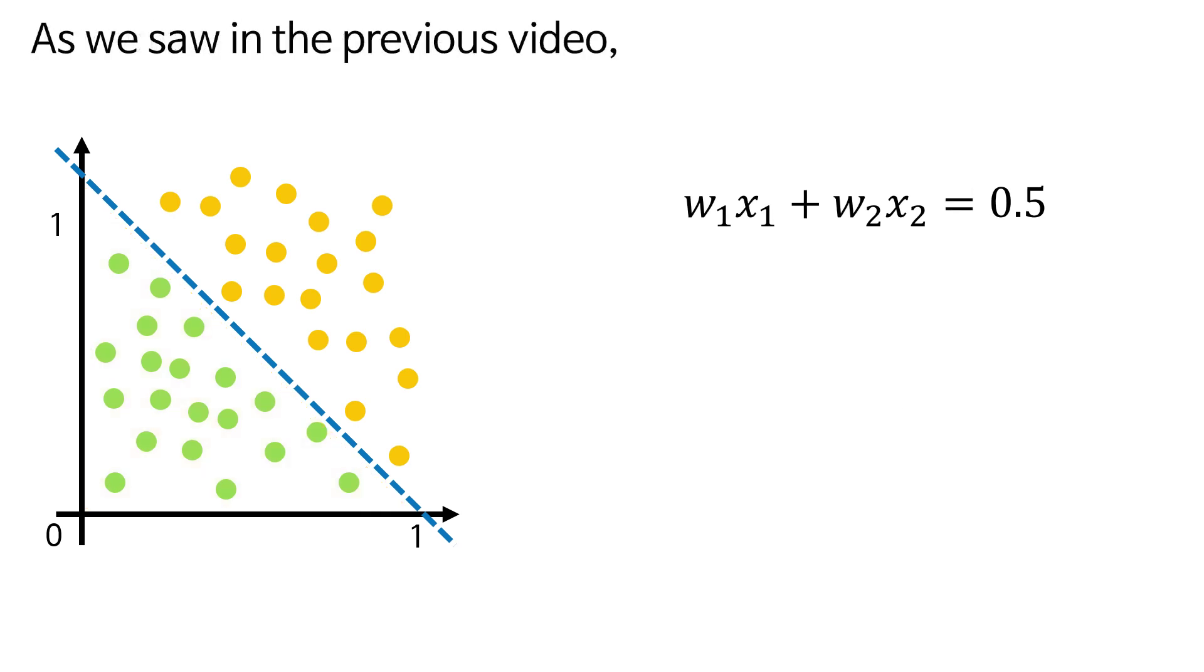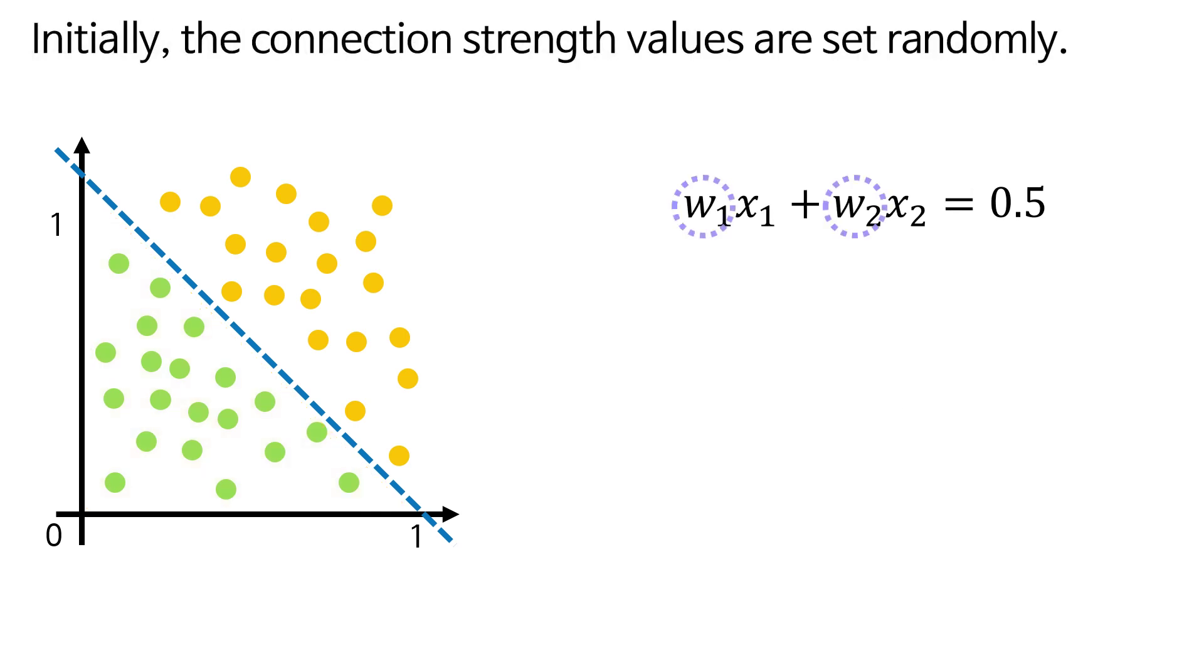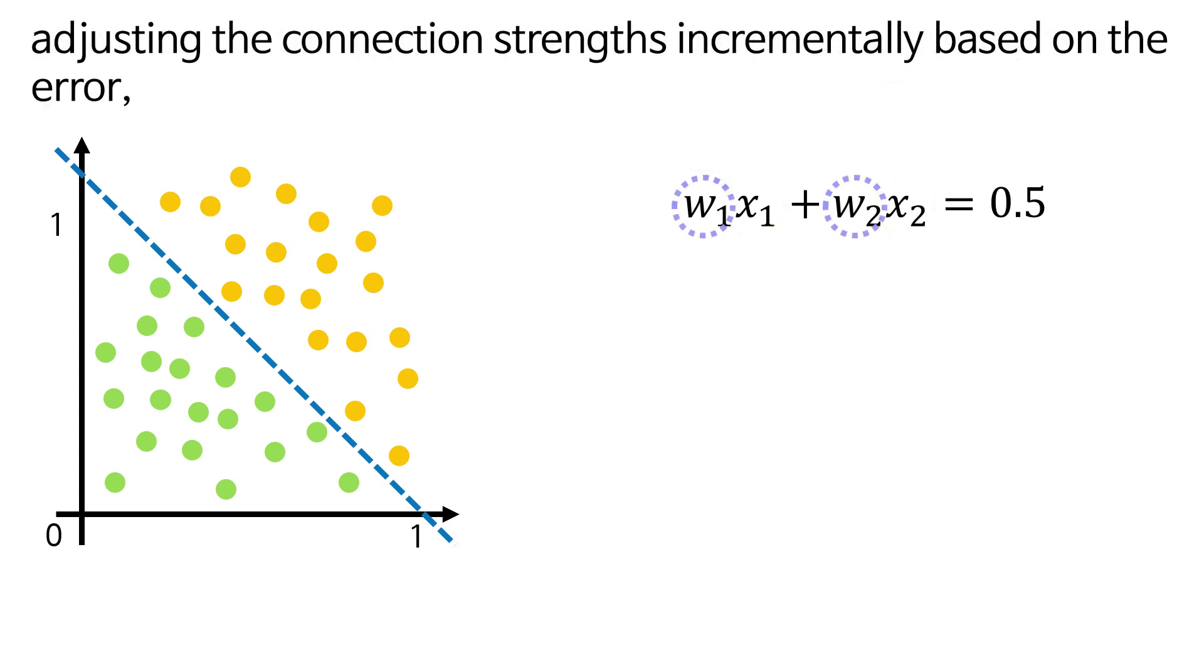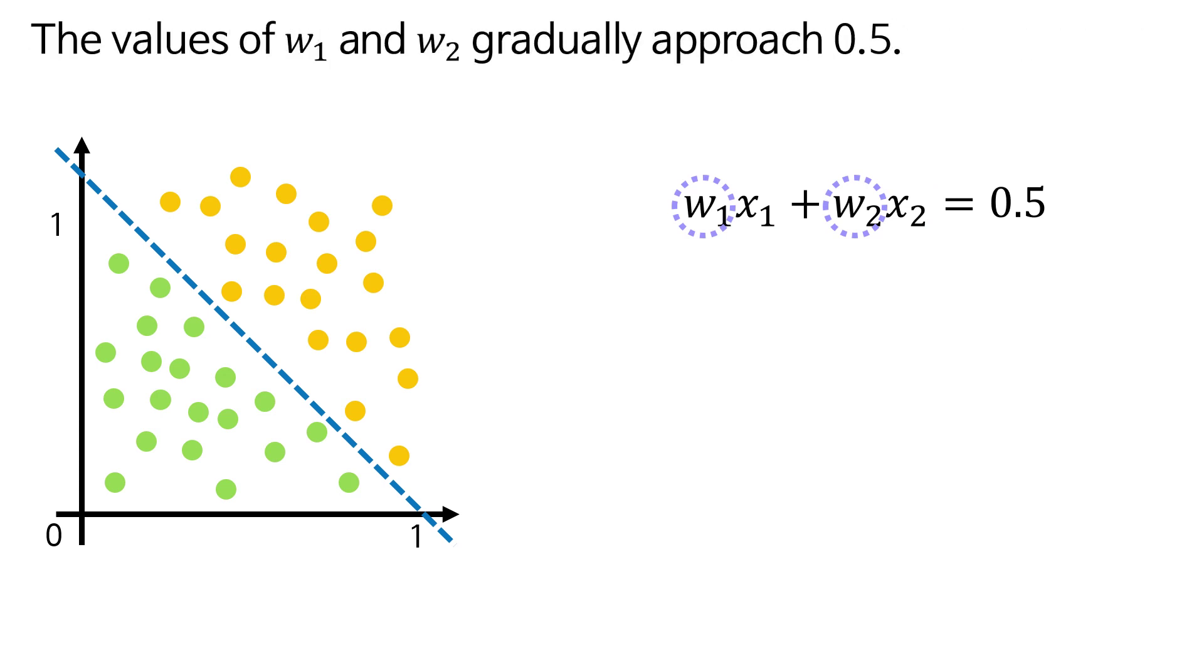As we saw in the previous video, initially the connection strength values are set randomly. As we iterate through the points on the plane, inputting them into x1 and x2, adjusting the connection strengths incrementally based on the error, the values of w1 and w2 gradually approach 0.5.